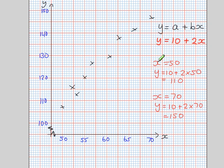Now what you're going to do is plot this point. When x is 50, y is 110. And when x is 70, y is 150. The first one, x is 50, y is 110, so you have this point here. The second one, x is 70, y is 150. There.